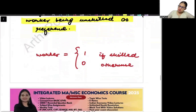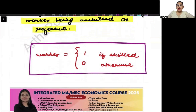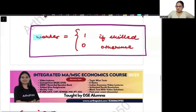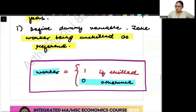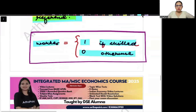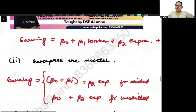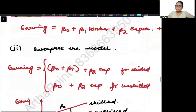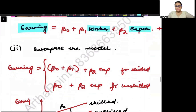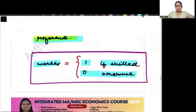So this is the dummy that has been defined here. Worker is 0 if unskilled — because we need to take unskilled as the reference — and 1 if skilled. So now I have gone ahead and formulated this regression model, writing earning as a function of worker and experience.